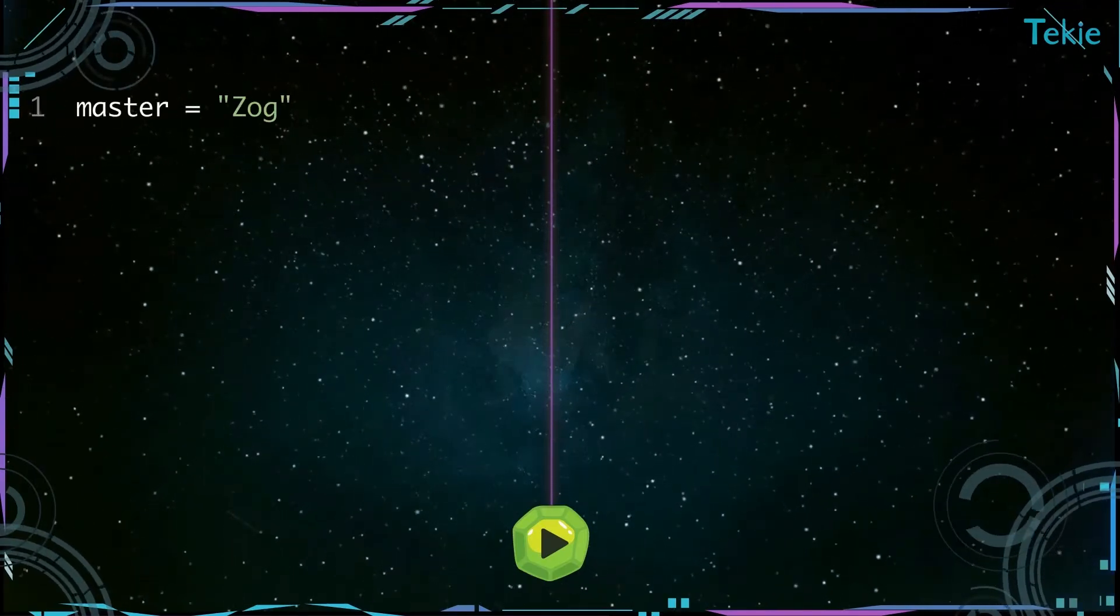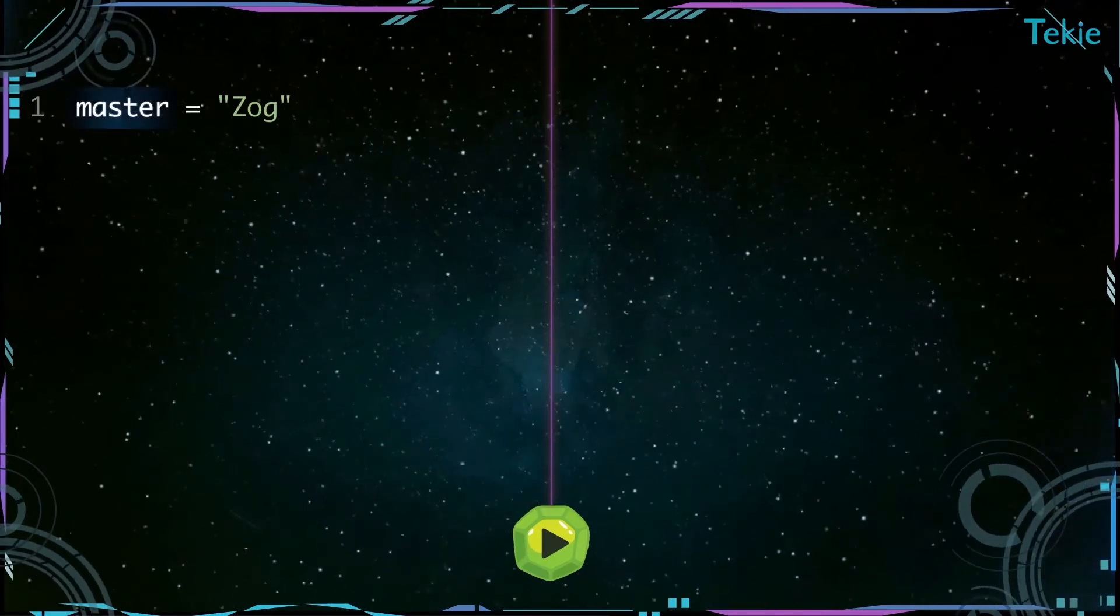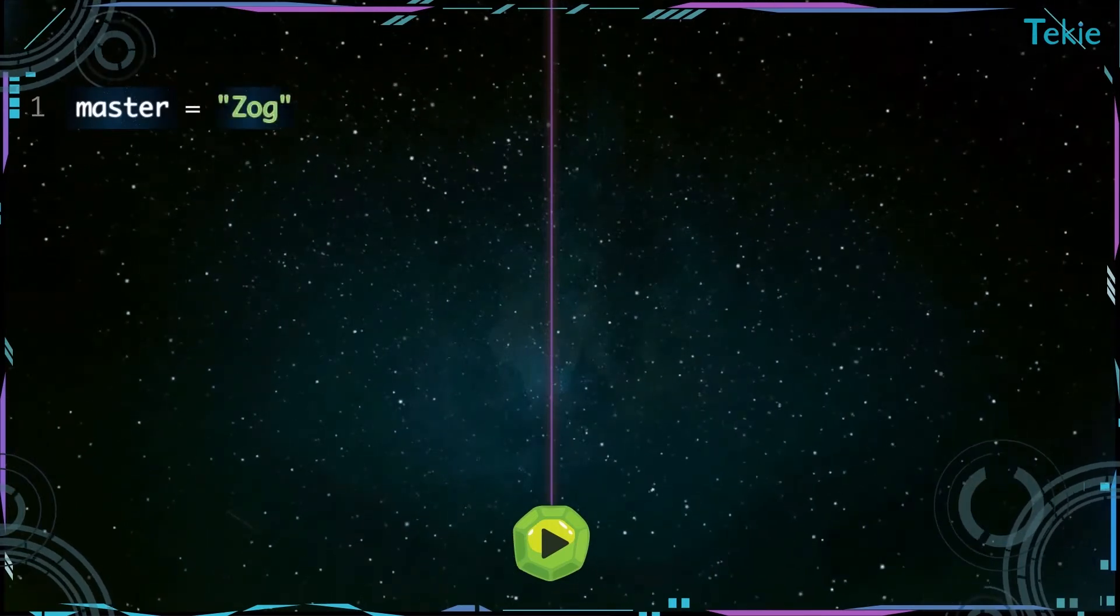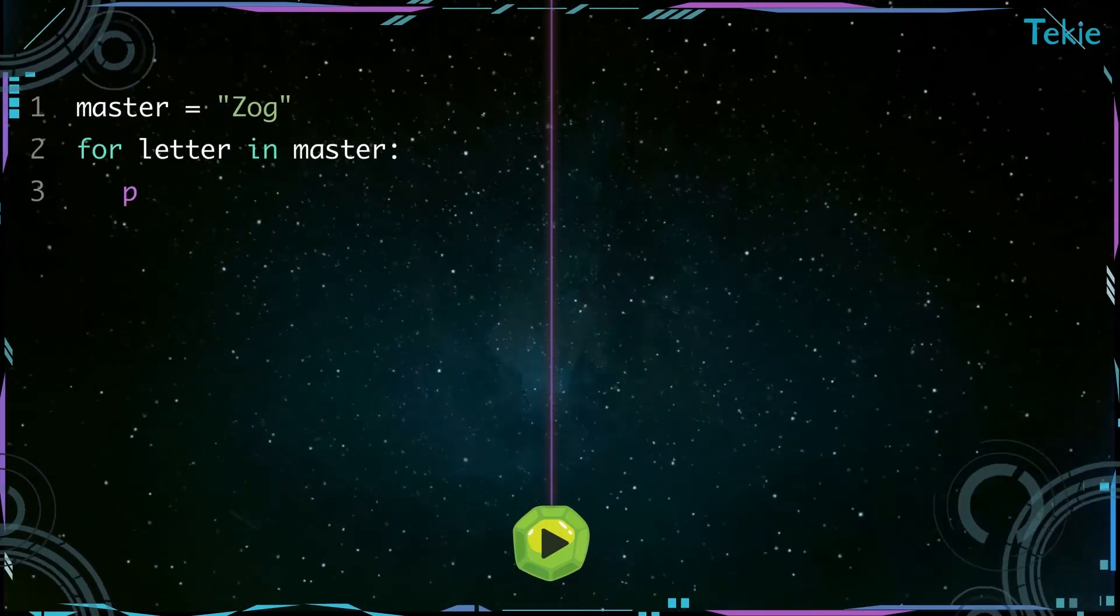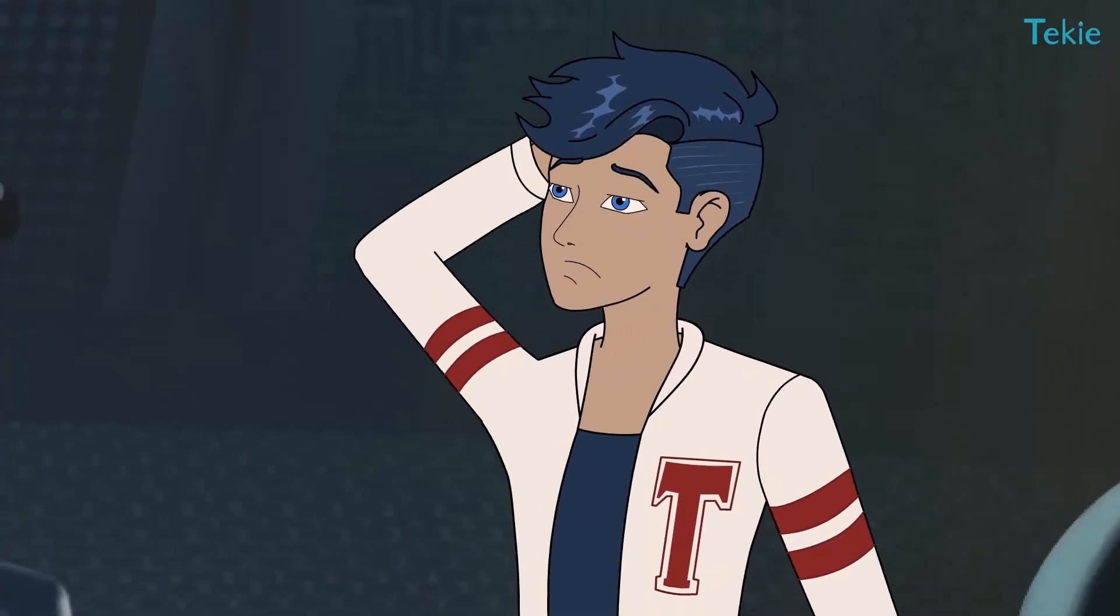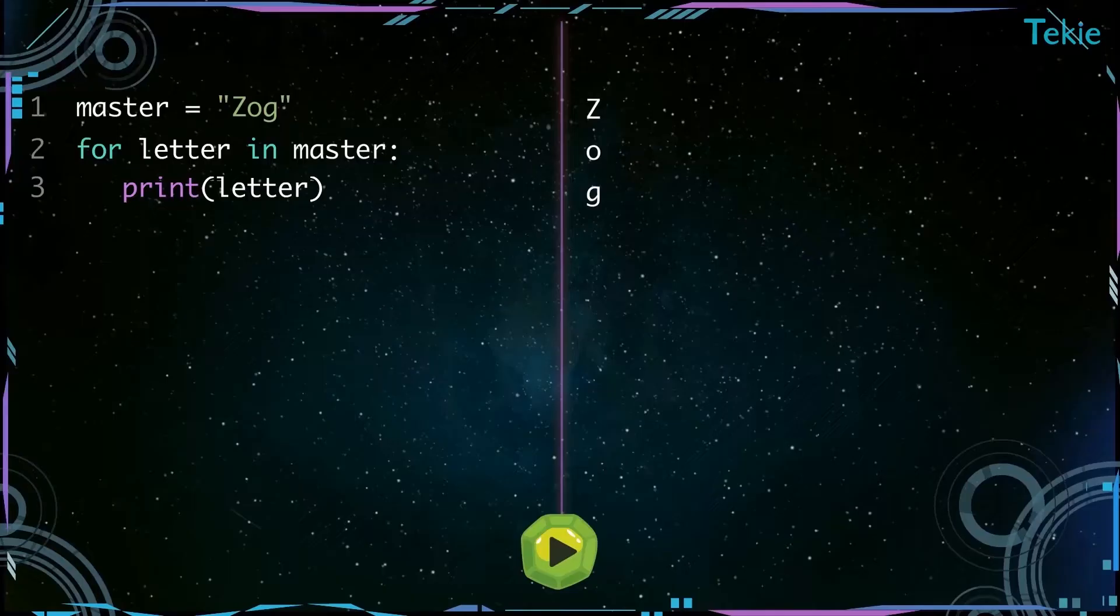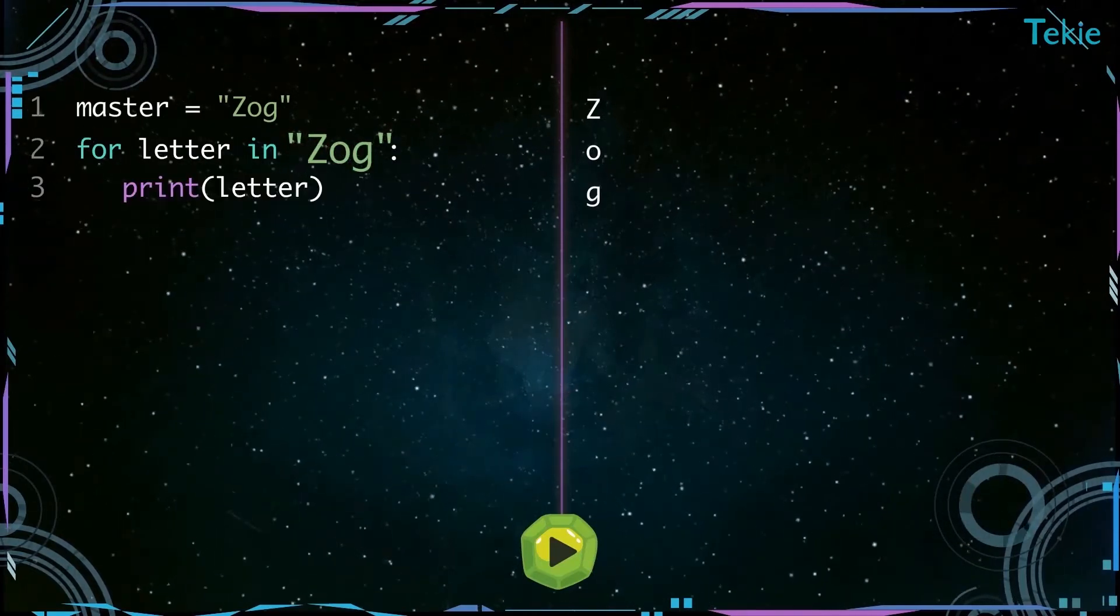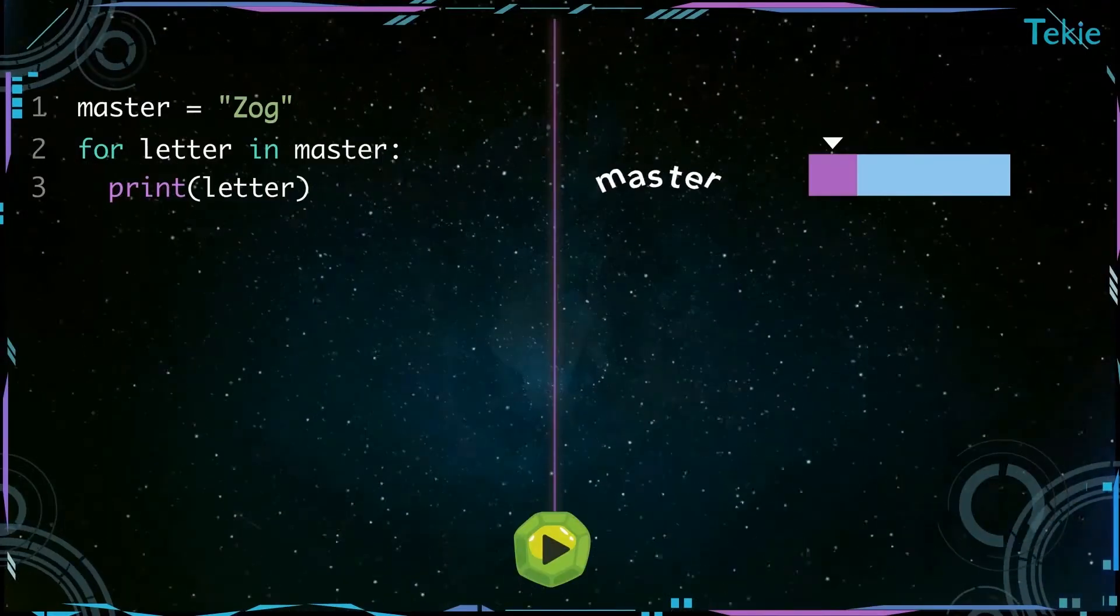Look, okay. We create a variable which holds the word Zog. Follow me, okay? This code is a way of saying for each letter in the word Zog, print the letter. The loop runs for each letter the variable master holds.